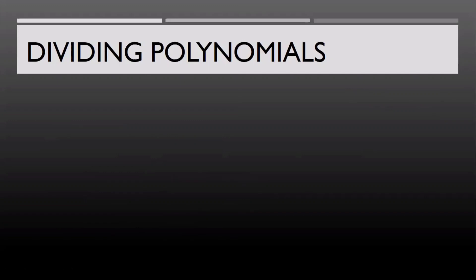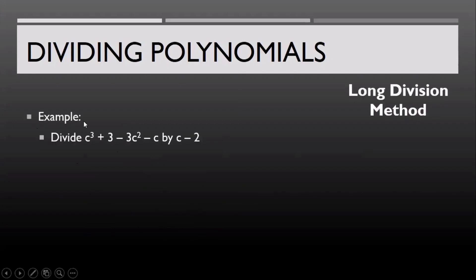To divide a polynomial by another polynomial with at least two terms, the long division method is applied. For example, we have to divide c raised to 3 plus 3 minus 3c squared minus c by c minus 2.